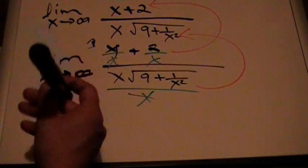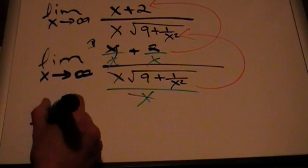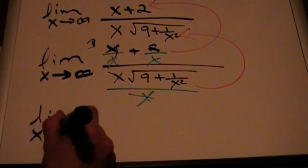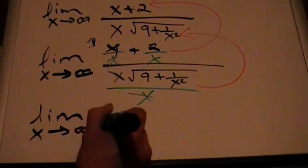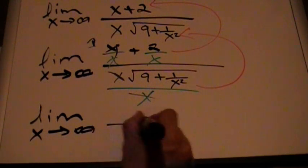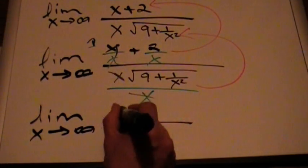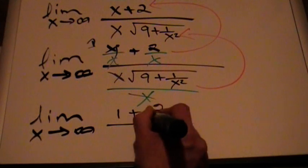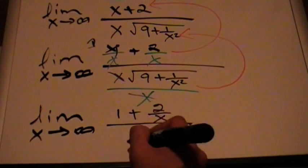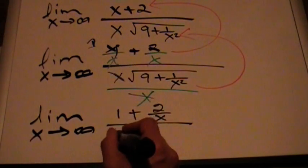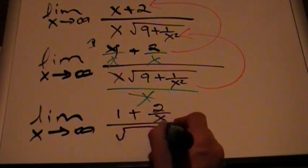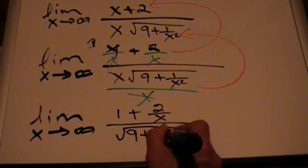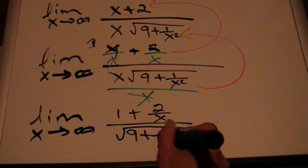Now I have the limit as x approaches infinity of (1 + 2/x) divided by √(9 + 1/x²).